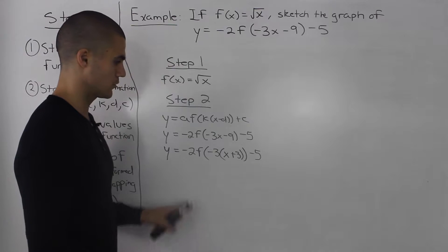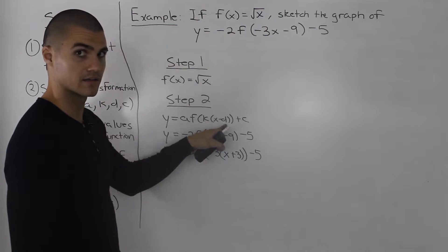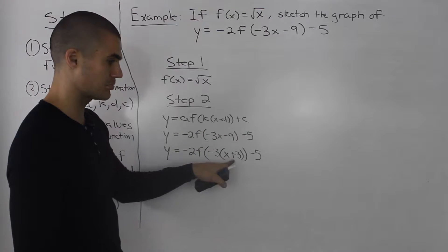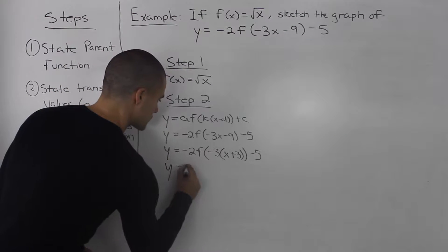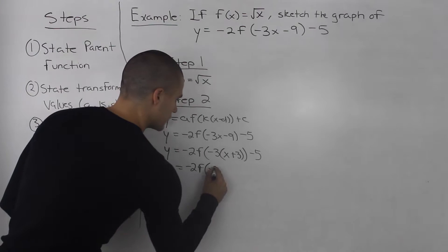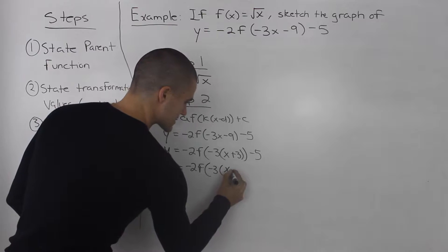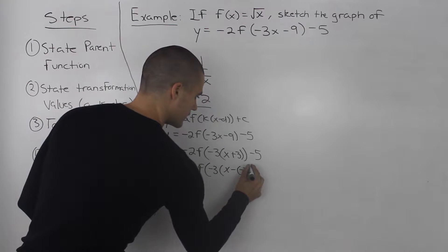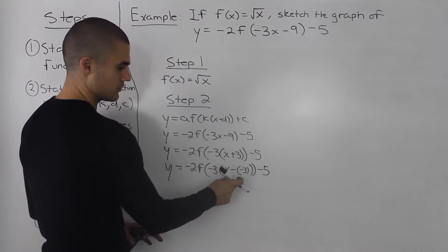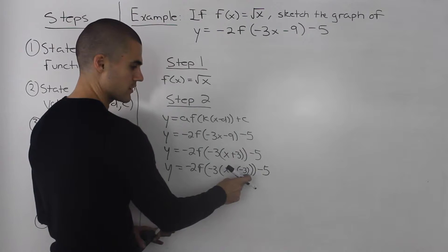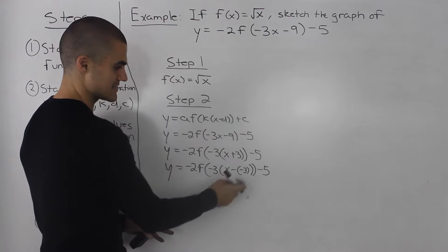There's one more thing to notice: in the general form it's x minus d, but we currently have x plus 3. To change it to x minus d form, we rewrite x plus 3 as x minus negative 3, which is the same value. So now it's in the x minus d form.